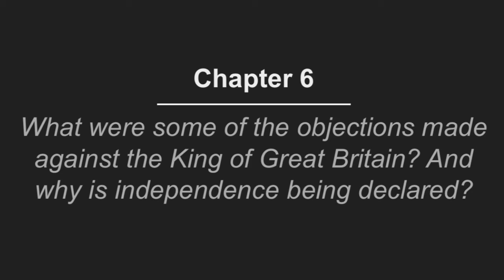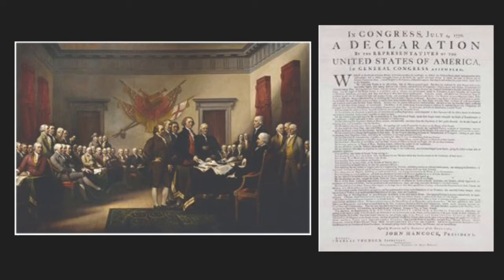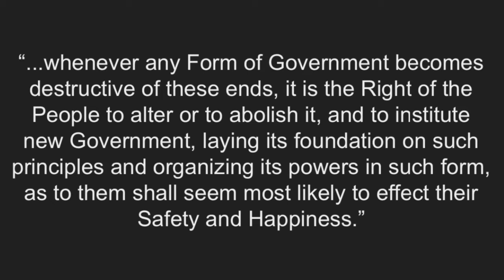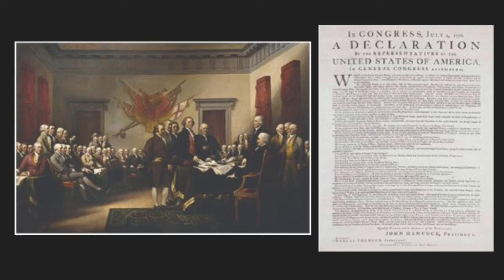Question 6: What were some of the objections made against the King of Great Britain, and why is independence being declared? The Declaration of Independence is, as its name states, a declaration of independence by America to the King of Great Britain, due to his great injustice towards them. According to the Declaration of Independence, whenever any form of government becomes destructive of these ends, it is the right of the people to alter or to abolish it, and to institute new government, laying its foundations on such principles and organizing its powers in such form as to them shall seem most likely to affect their safety and happiness. Because of the King's tyrannical behavior, the colonists wish to leave his rule and create a government of their own.